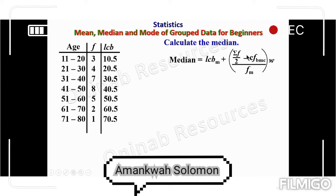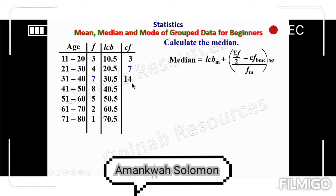Now we create the cumulative frequency column. Starting with 3, then 3 plus 4 gives 7, then 7 plus 7 gives 14, then 14 plus 8 gives 22, then 22 plus 5 gives 27, then 27 plus 2 gives 29, and finally 29 plus 1 gives 30 — the cumulative frequency for the last class interval.